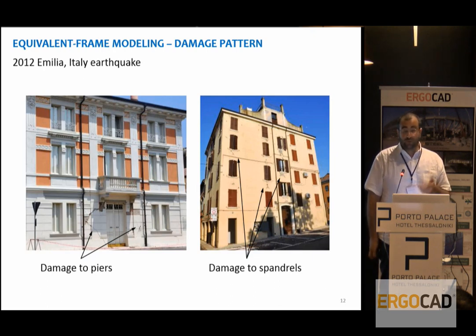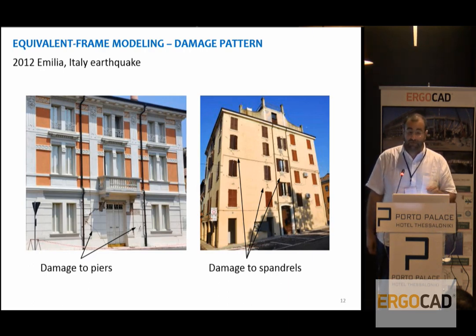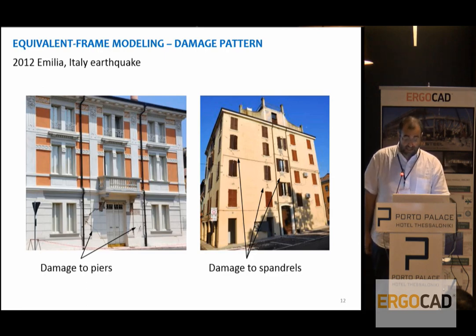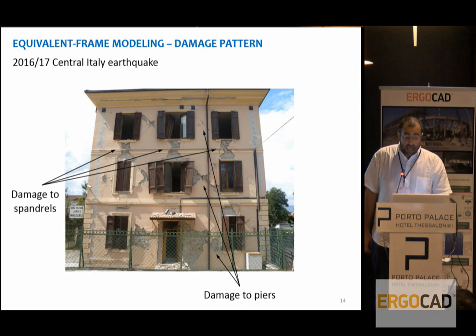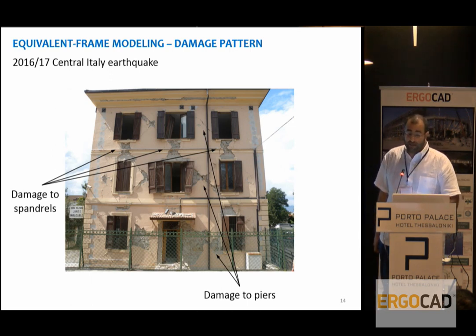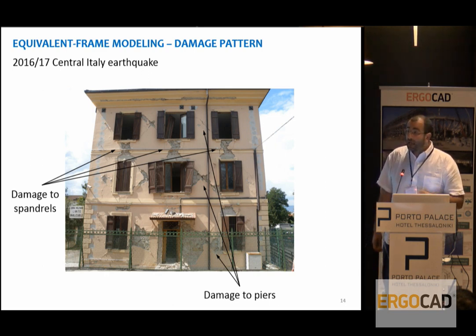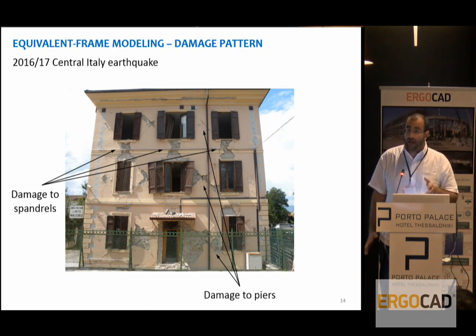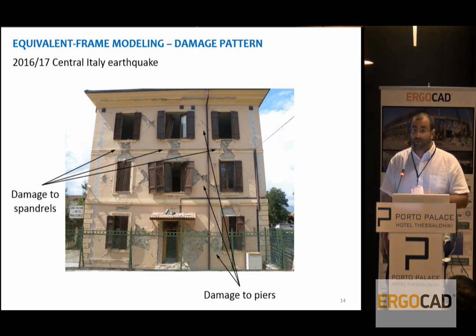Looking at the more recent 2012 Emilia earthquake in Italy, we can see other examples of damage — especially localized in piers on the left-hand side photo, or in spandrels on the right-hand side. Of course combined mechanisms can appear, like in this case where both spandrels and piers were damaged. An even more recent example from Amatrice in central Italy: that building had actually been retrofitted to prevent local out-of-plane overturning of walls, and it behaved like a big box, emphasizing the global response. All piers and spandrels were damaged but the building did not collapse.